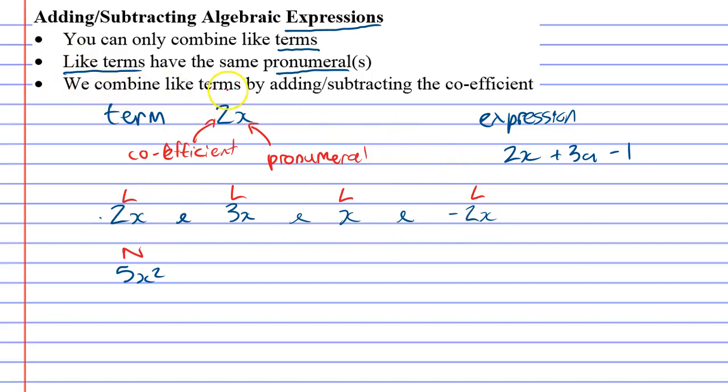Last point: we combine like terms by adding or subtracting the coefficients. I'll show you a basic example of this. Let's say I was doing 2x plus 3x. I can combine them by saying 2 plus 3 is 5 and putting the x next to it, giving us 5x.